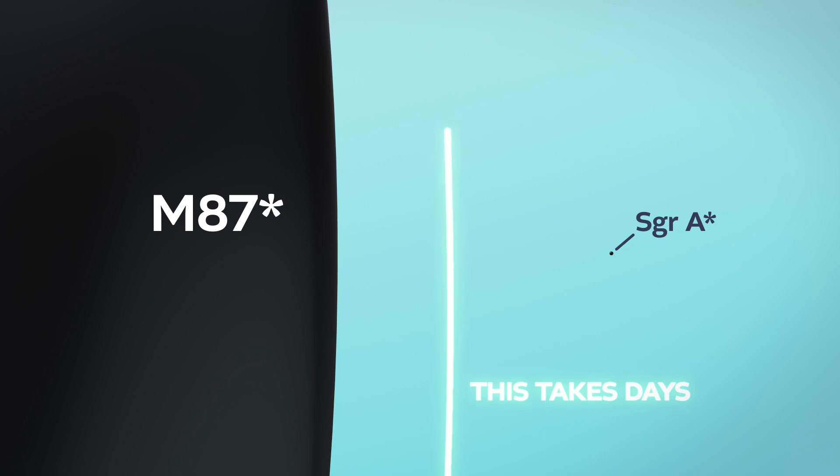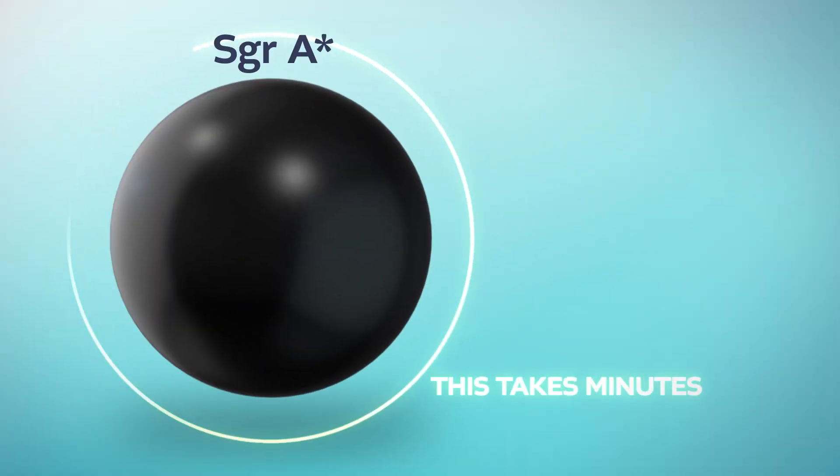Because Sagittarius A star is so much smaller, it takes light just a few minutes to orbit around it.